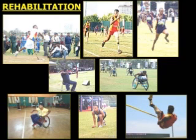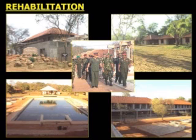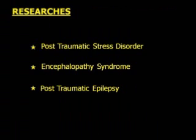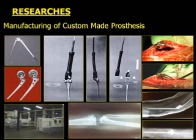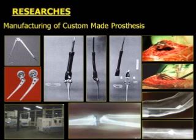Rehabilitation is not yet over. As per the concept of the Army command, we have started building a wellness resort to accommodate permanently disabled, totally dependent war heroes, with the intention of looking after them throughout their lives. Three main research projects are underway: post-traumatic stress disorders, encephalopathy syndrome, and post-traumatic epilepsy — though it is too early to comment on results. Another project is ongoing in collaboration with the biomedical engineering group at the University of Peradeniya to manufacture custom-made prostheses; the first surgery was done recently and was very successful.